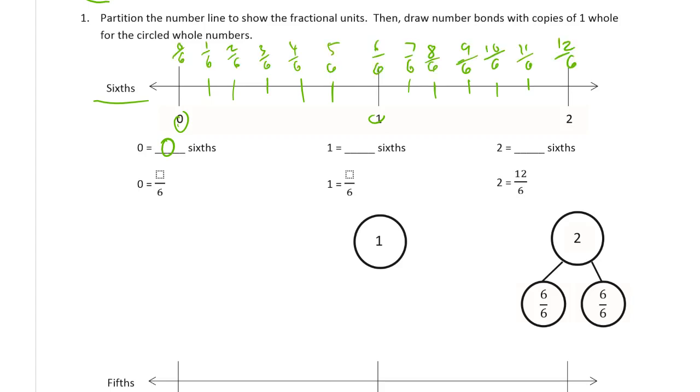If you're still not confident at recognizing where whole numbers, where the numerators have to be to match up to whole numbers, if you're not already confident at that, then you can just label all the fractions just like that. And you can see that it's 6 sixths.